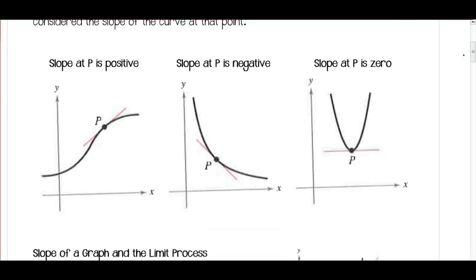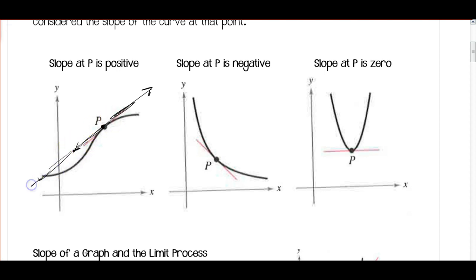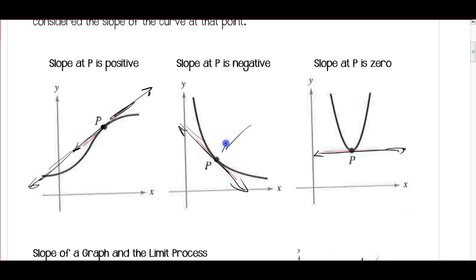Let's take a look at a couple different pictures. In this first picture, the slope at P is positive — here's point P and the tangent line is positive. The tangent line goes through this point on the curve. Unlike a tangent to a circle where it only intersects at one point, this tangent line can go through the curve again, but we're only interested in where it's tangent at point P. Here the slope at P is negative, and in this third example we have a horizontal tangent line, so the slope is zero.